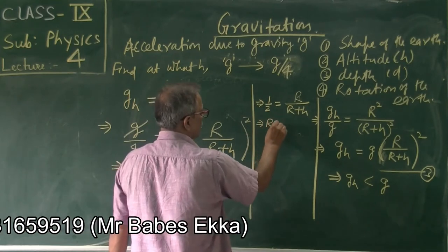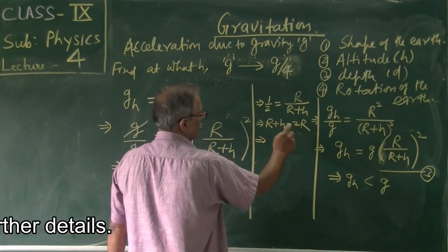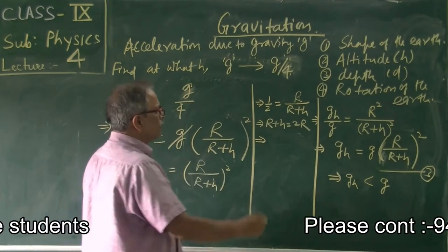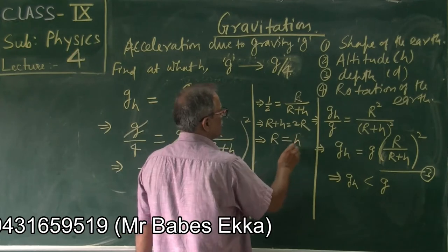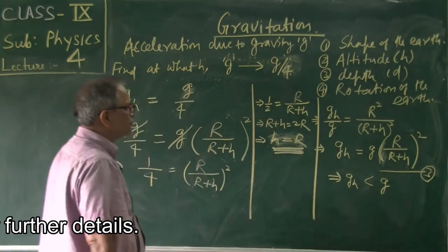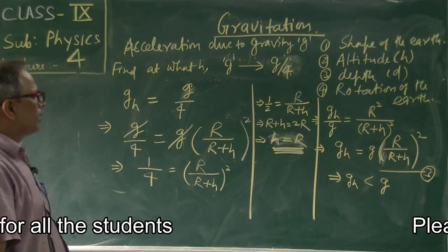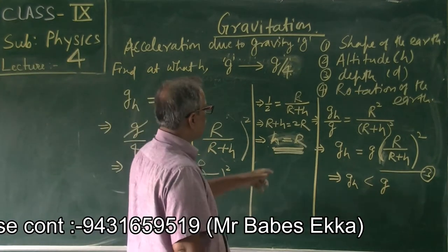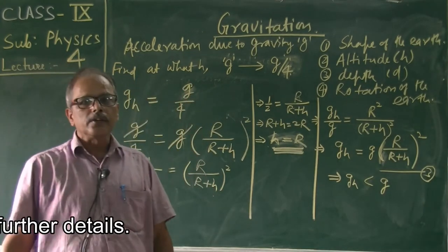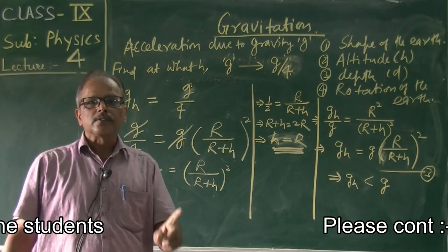Simplifying, r plus h equals 2r, so h equals r. When we go to a height equal to the radius of the earth, acceleration due to gravity becomes one-fourth of the acceleration due to gravity at the surface of earth.